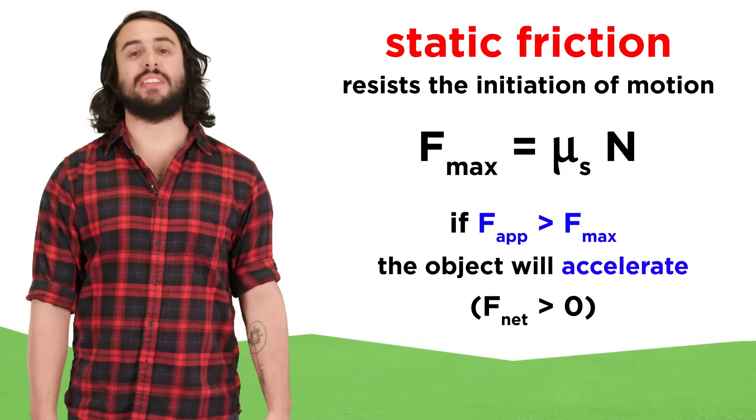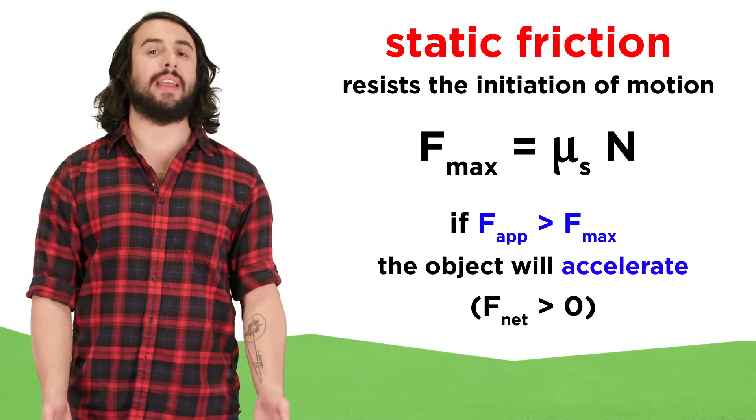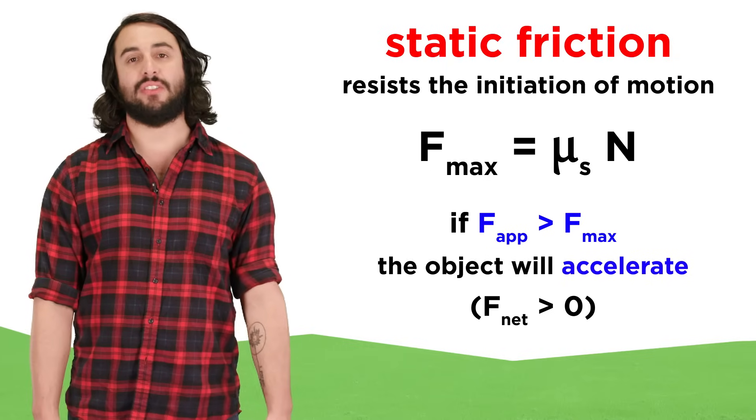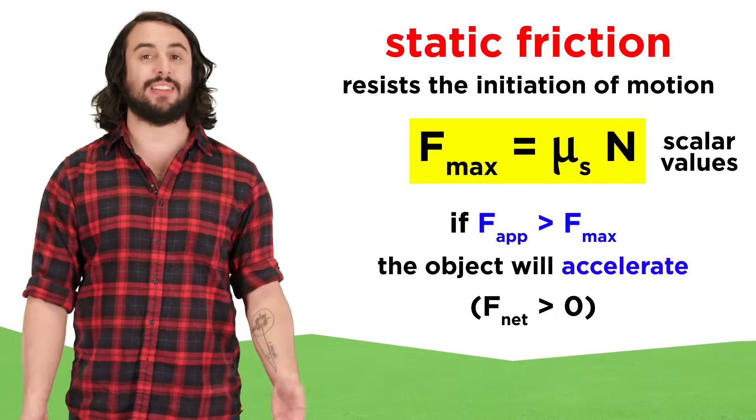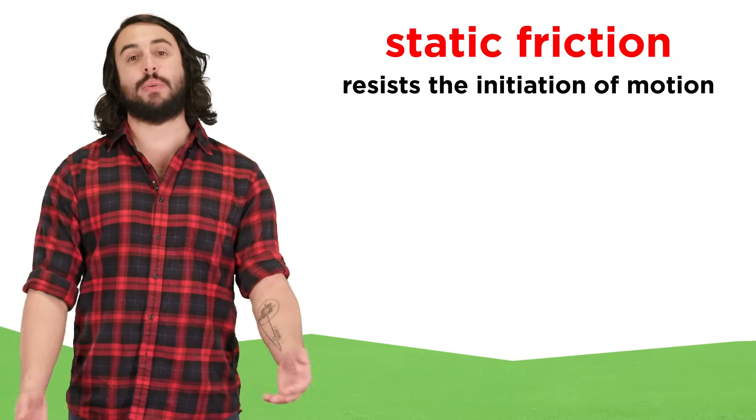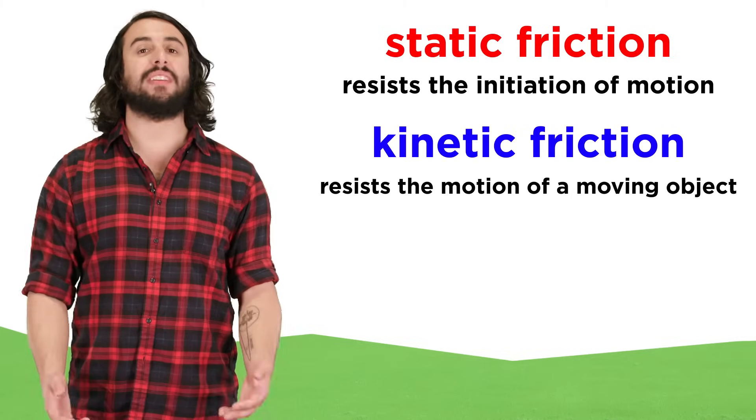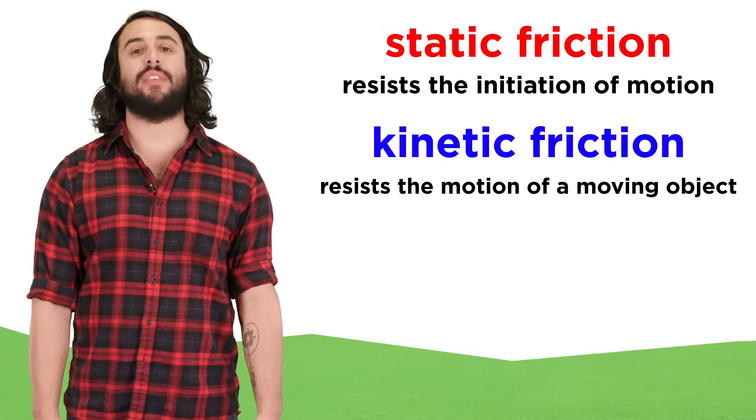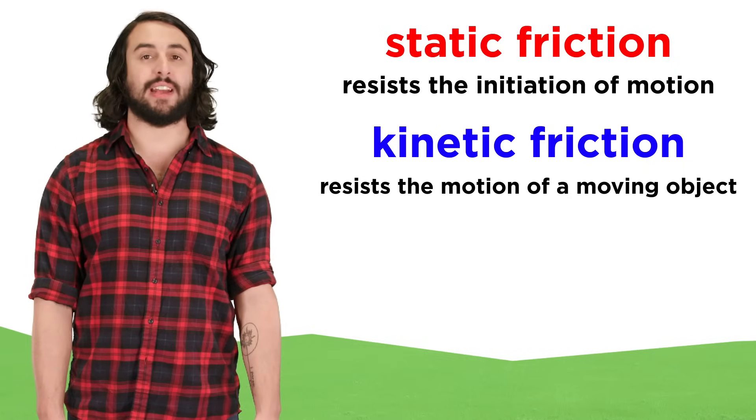As we said, once the applied force exceeds the maximum static friction, the object will begin to move. Bear in mind that this equation involves scalar quantities, not vectors, and therefore implies nothing about direction. As we said, static friction opposes the initiation of motion, but once an object is in motion, it is now moving against kinetic friction. This is the force that opposes relative sliding motion.